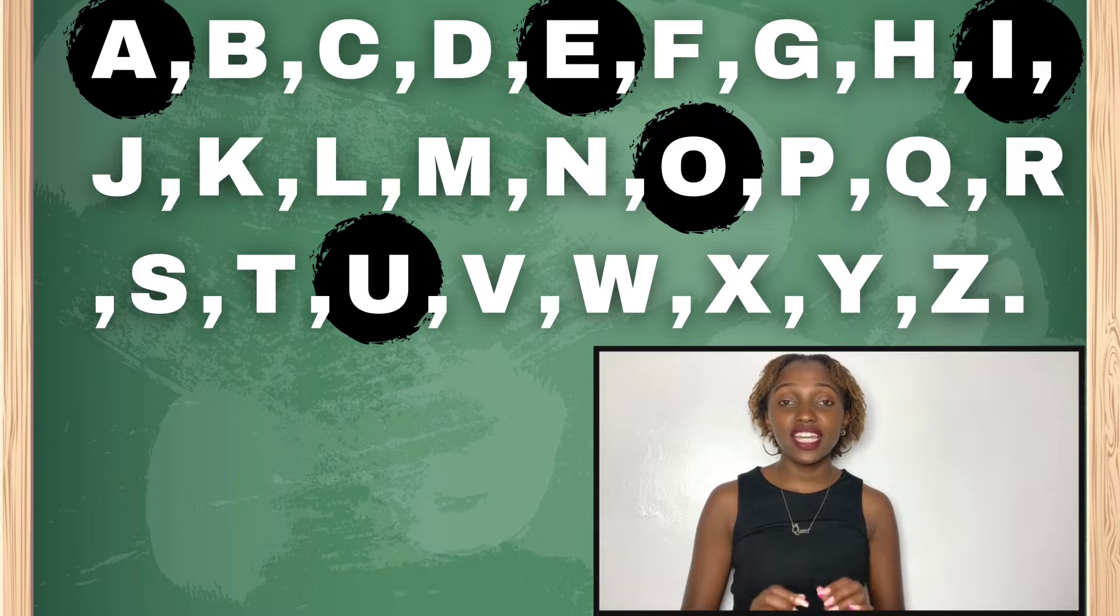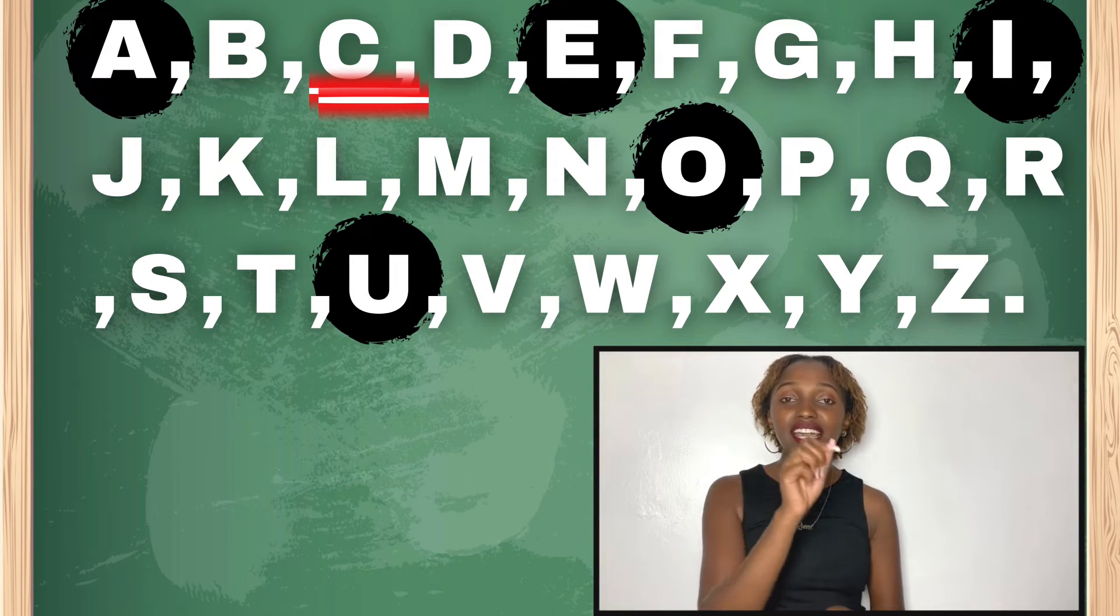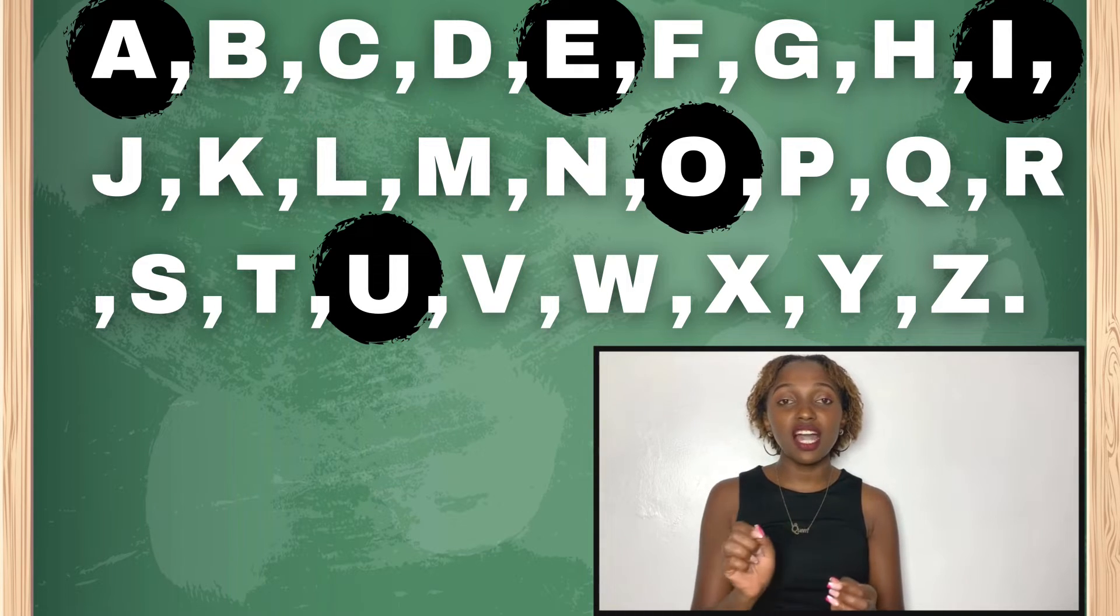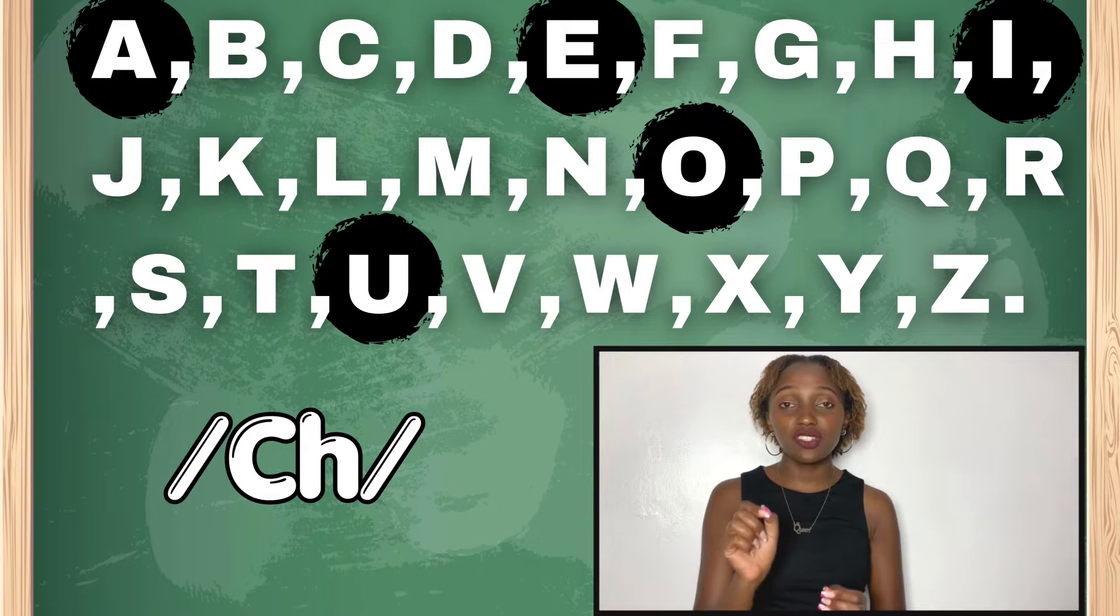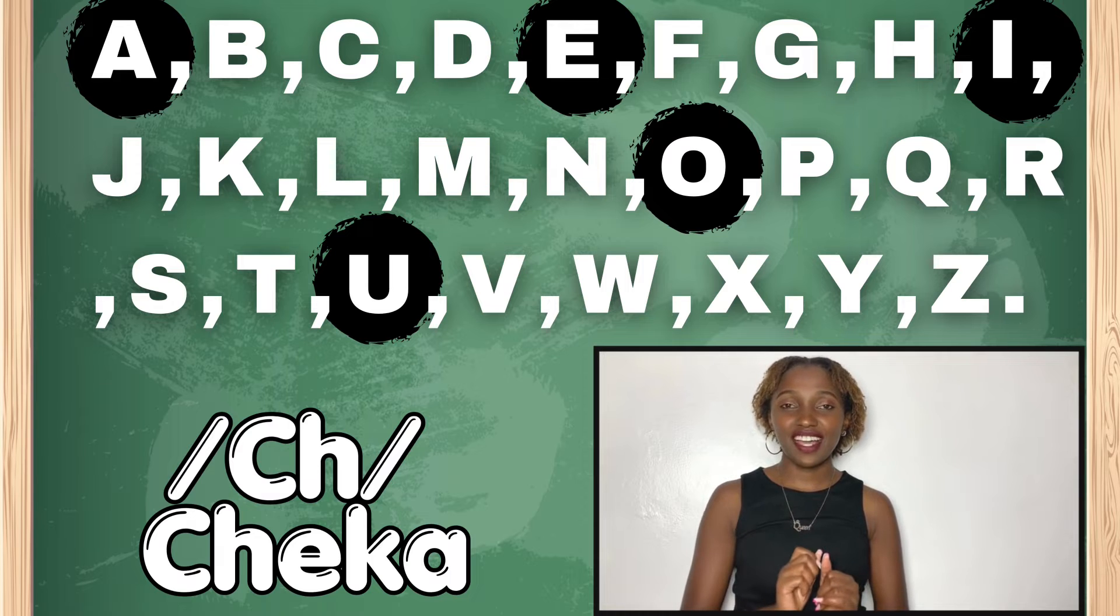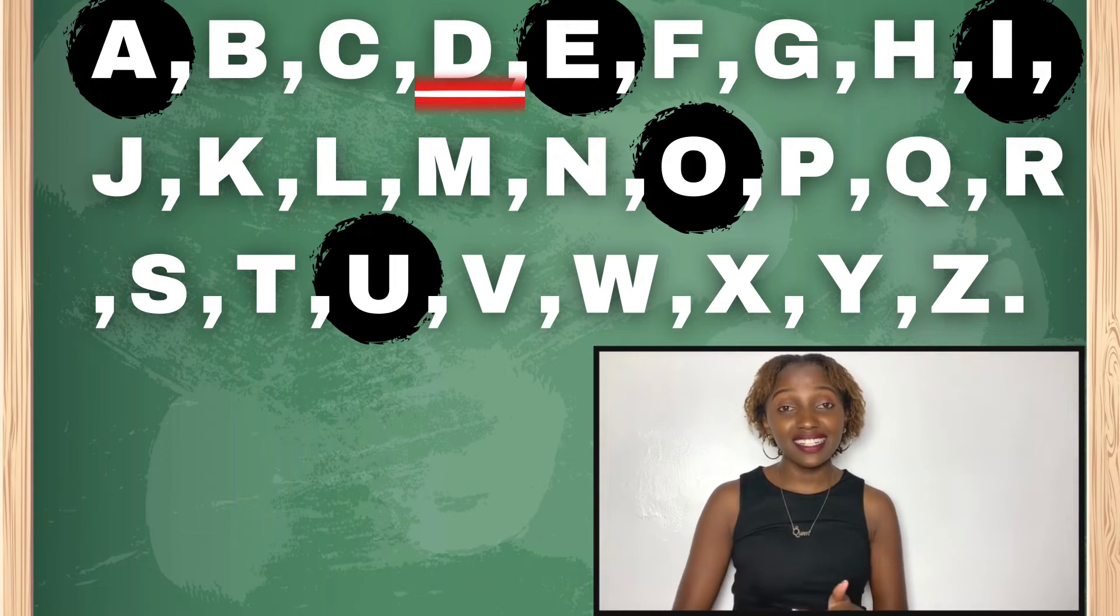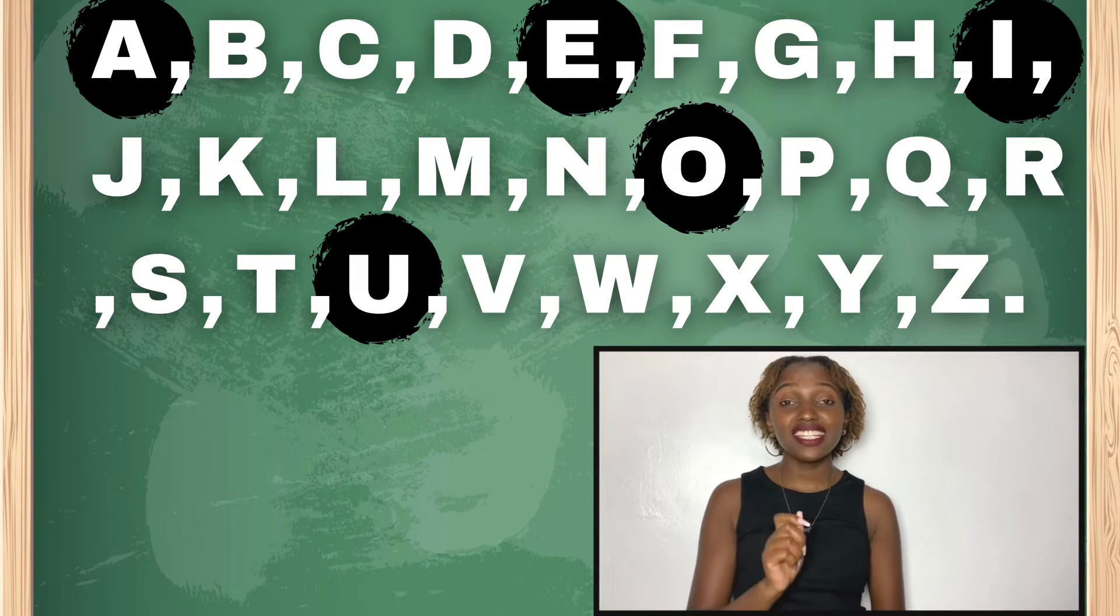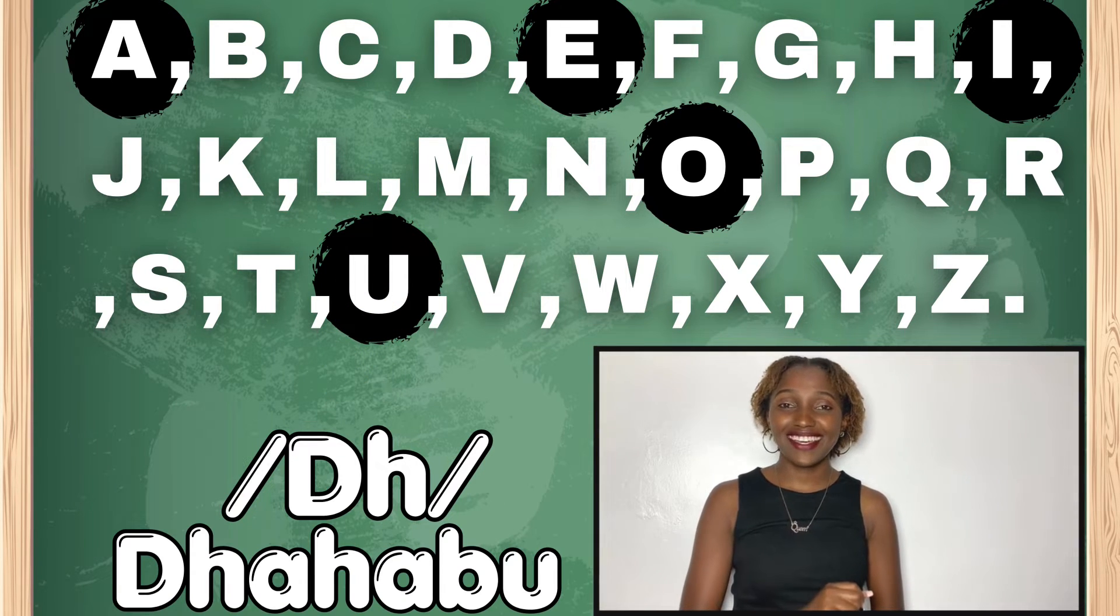Alafu katika kiswahili, katika kiswahili hatuna C. Sasa badala ya C, we combine the C with a H to form the sound CH. Yo sauti ni CH. Sauti CH kama CHECK. Sasa tukitoka kwa CH, tunaenda kwa D. Pia katika D, tunaiza ungeza sauti H to kutengeneza sauti DH. Kama THAHABU.